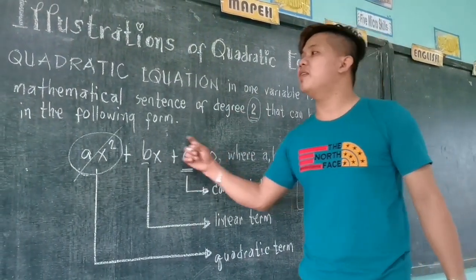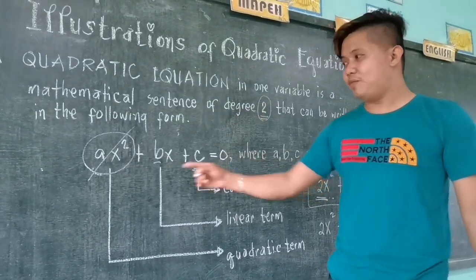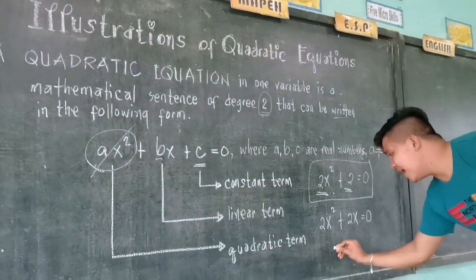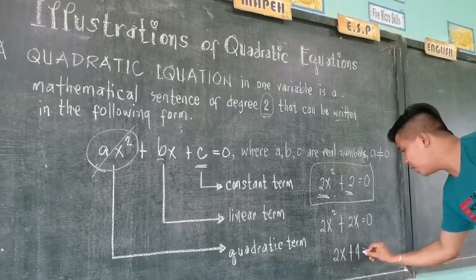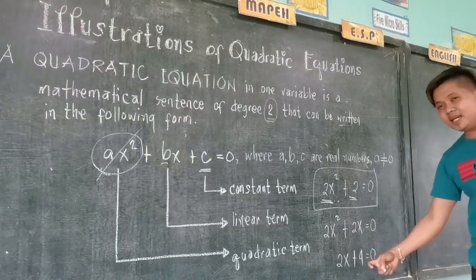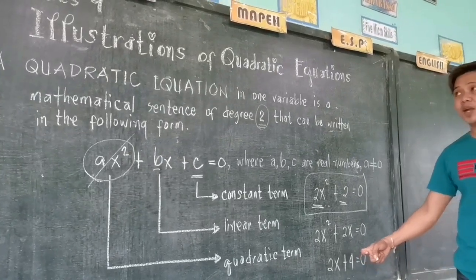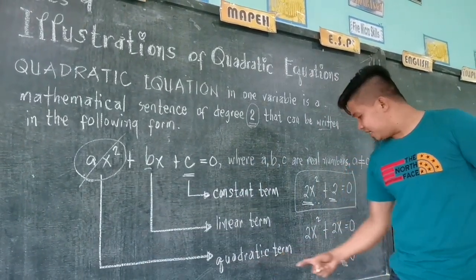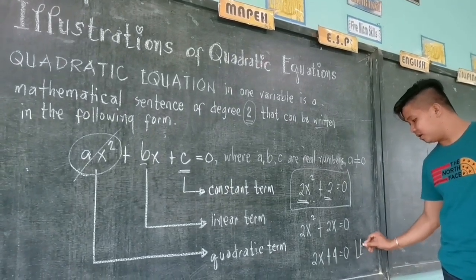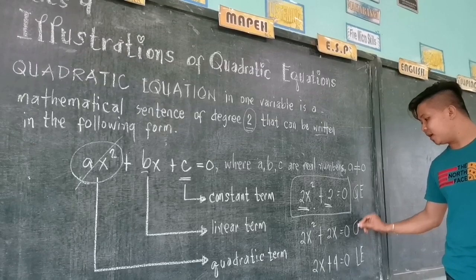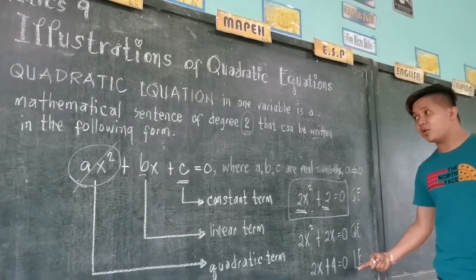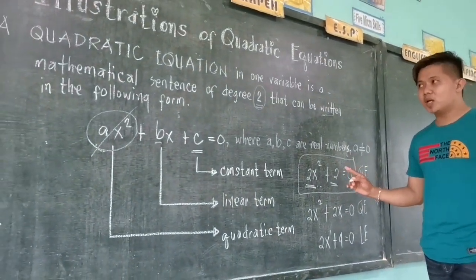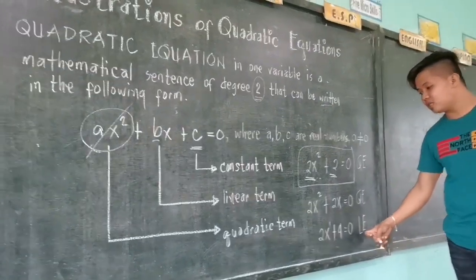The absence of c cannot affect the equation. However, if our quadratic term is missing — for example, if we only have 2x plus 4 equals zero — this equation will never be called a quadratic equation because of the absence of the quadratic term. This is just a linear equation. The difference between linear and quadratic: quadratic is of degree 2, and linear equation is of degree 1.